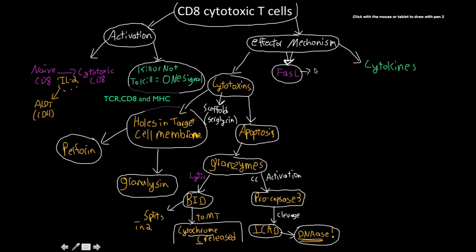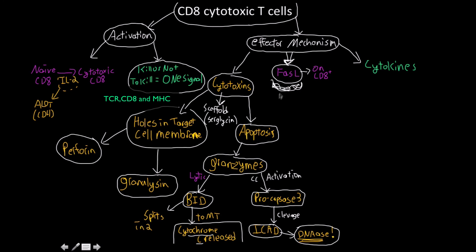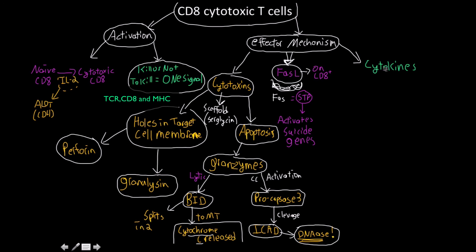The FAS ligand is located on the cytotoxic T cell. It binds to the FAS receptor on the infected cell. This interaction triggers a signal transduction pathway that results in the activation and turning on of apoptotic — suicide — genes in the target cell.